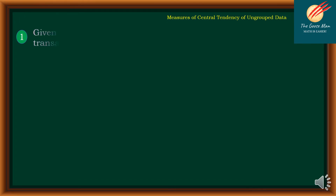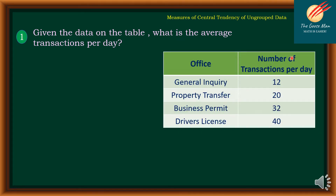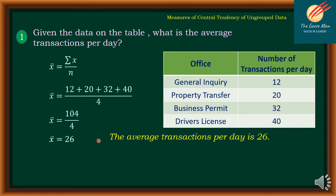For example number one, given the data on the table — general inquiry, property transfer, business permit, and driver's license with transactions 12, 20, 32, and 40 respectively — what is the average transactions per day? Using the formula, mean = summation of x over n: we have (12 + 20 + 32 + 40) divided by 4, giving us 104 divided by 4. Therefore, the mean is equal to 26, so the average transactions per day is 26.